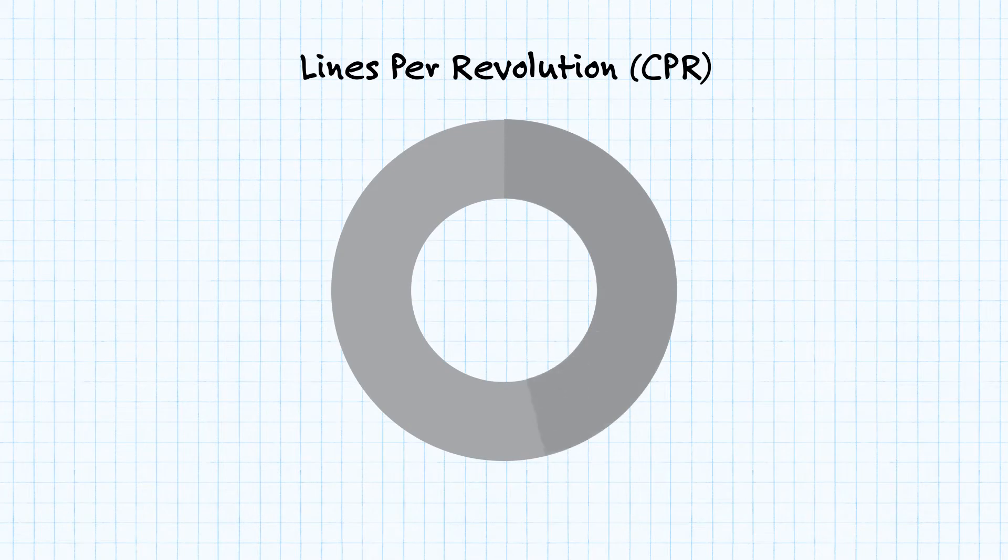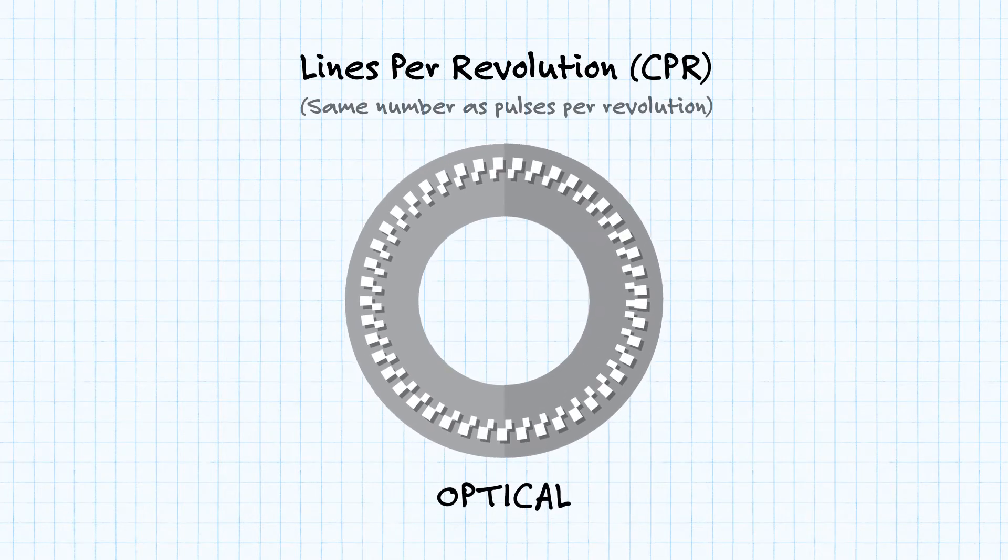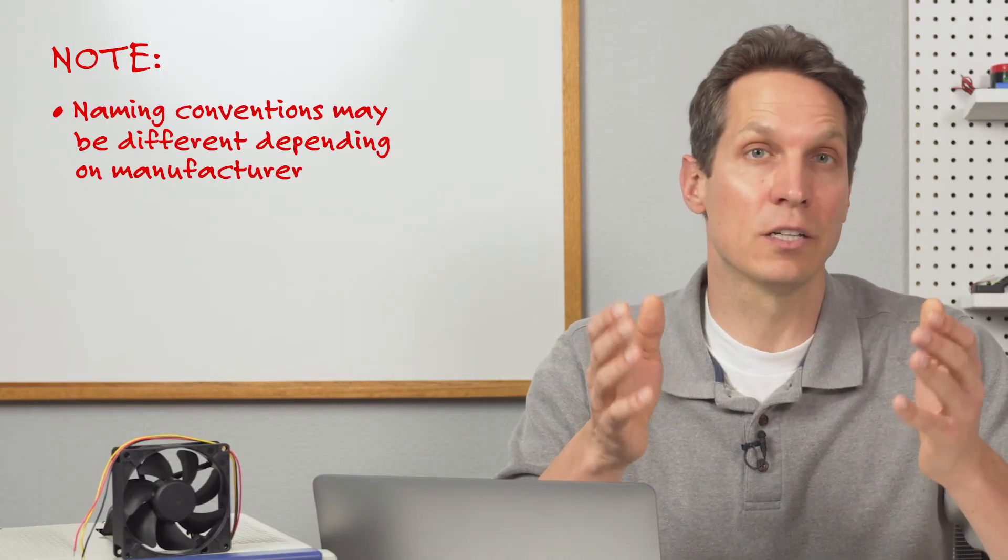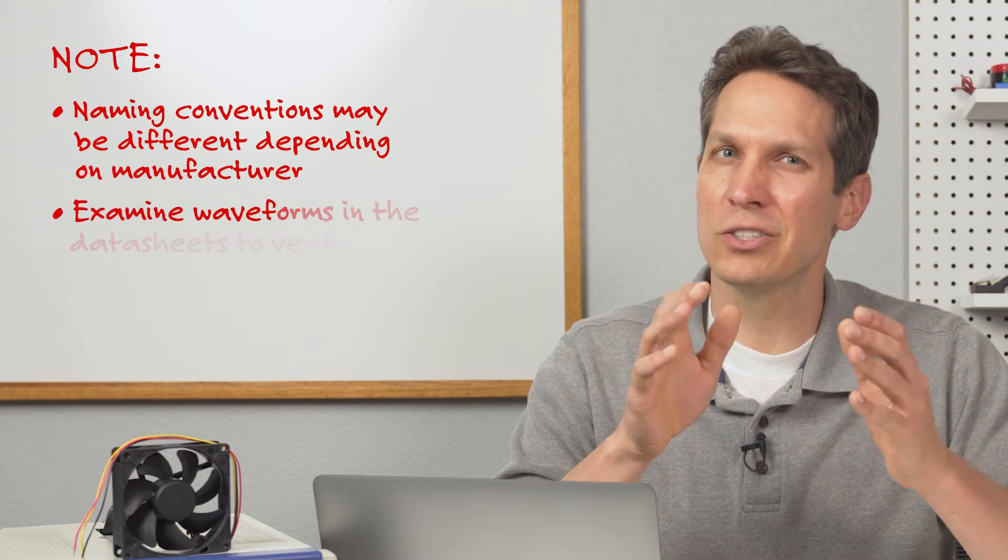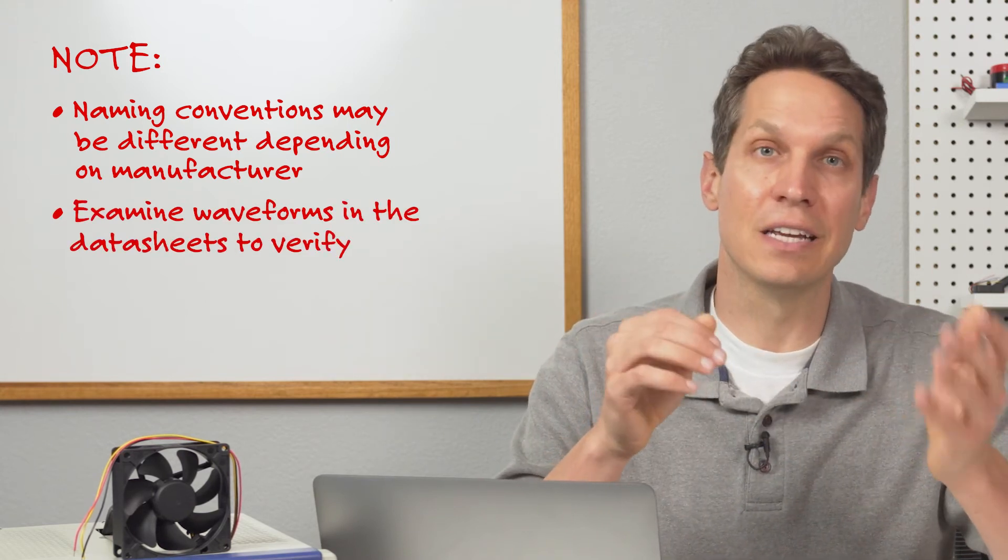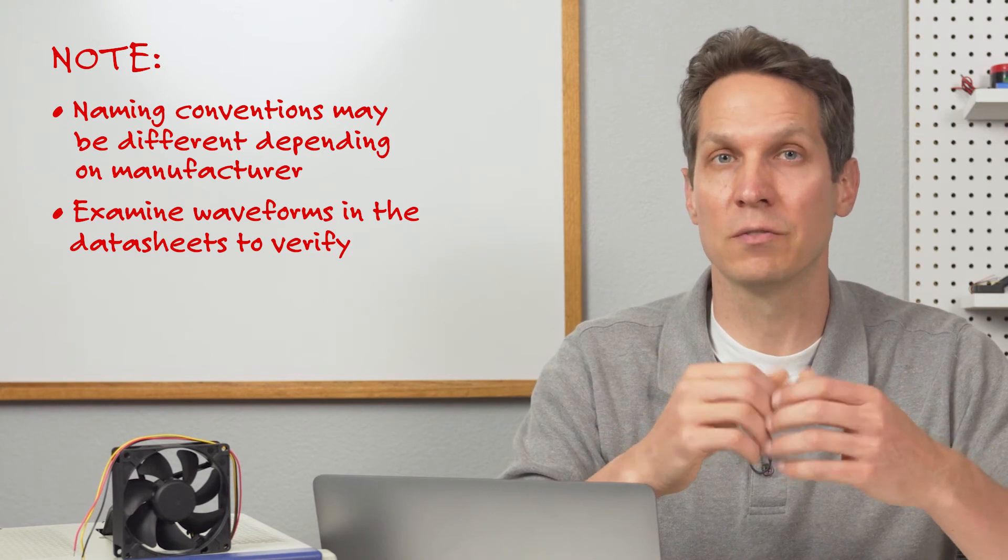Lines per revolution references the lines either printed or etched on a typical optical encoder disk, and is the same number as pulses per revolution. Again, naming conventions may be different depending on the manufacturer. So if you are uncertain and want to confirm that you're comparing things properly, I recommend looking at the data sheets and examining the waveforms themselves to verify.